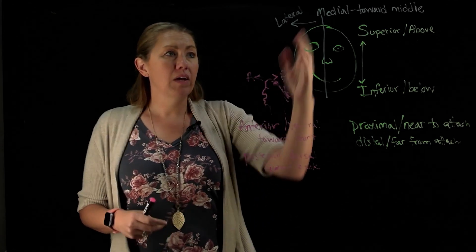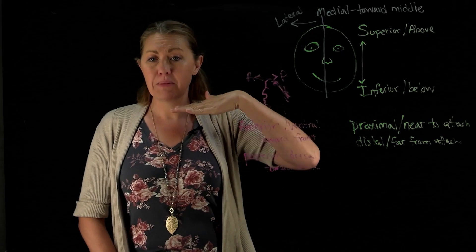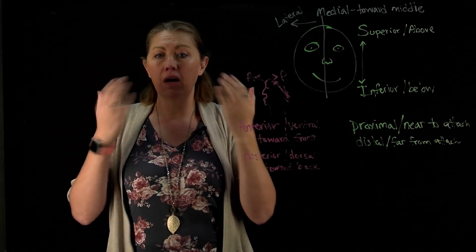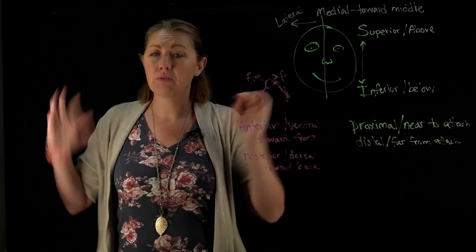Okay, so we have medial, lateral, in and out. Superior, inferior, up and down. Proximal, distal, up and down on limbs. And then we have anterior and posterior for front to back.